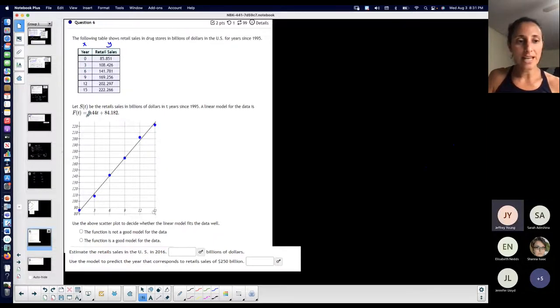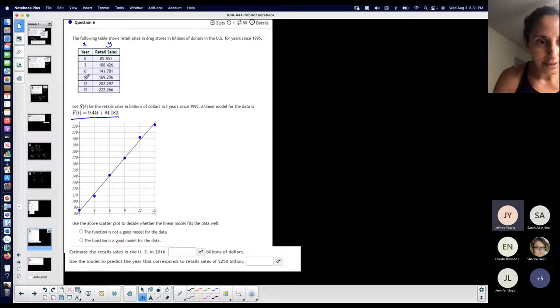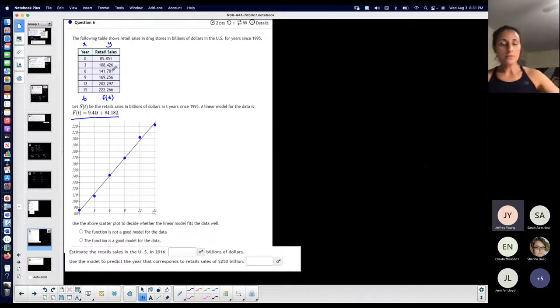Now, they gave me the equation. Thank you very much. Let S of T be the retail sales in billions of years. In T since 1995, a linear model for this data is. I think they may have made a little typo from S of T versus F of T. Either way, you see that T is like my X, T, and F of T, the outcome, the sales, probably they meant S of T, but is the outcome, the sales based on the time.